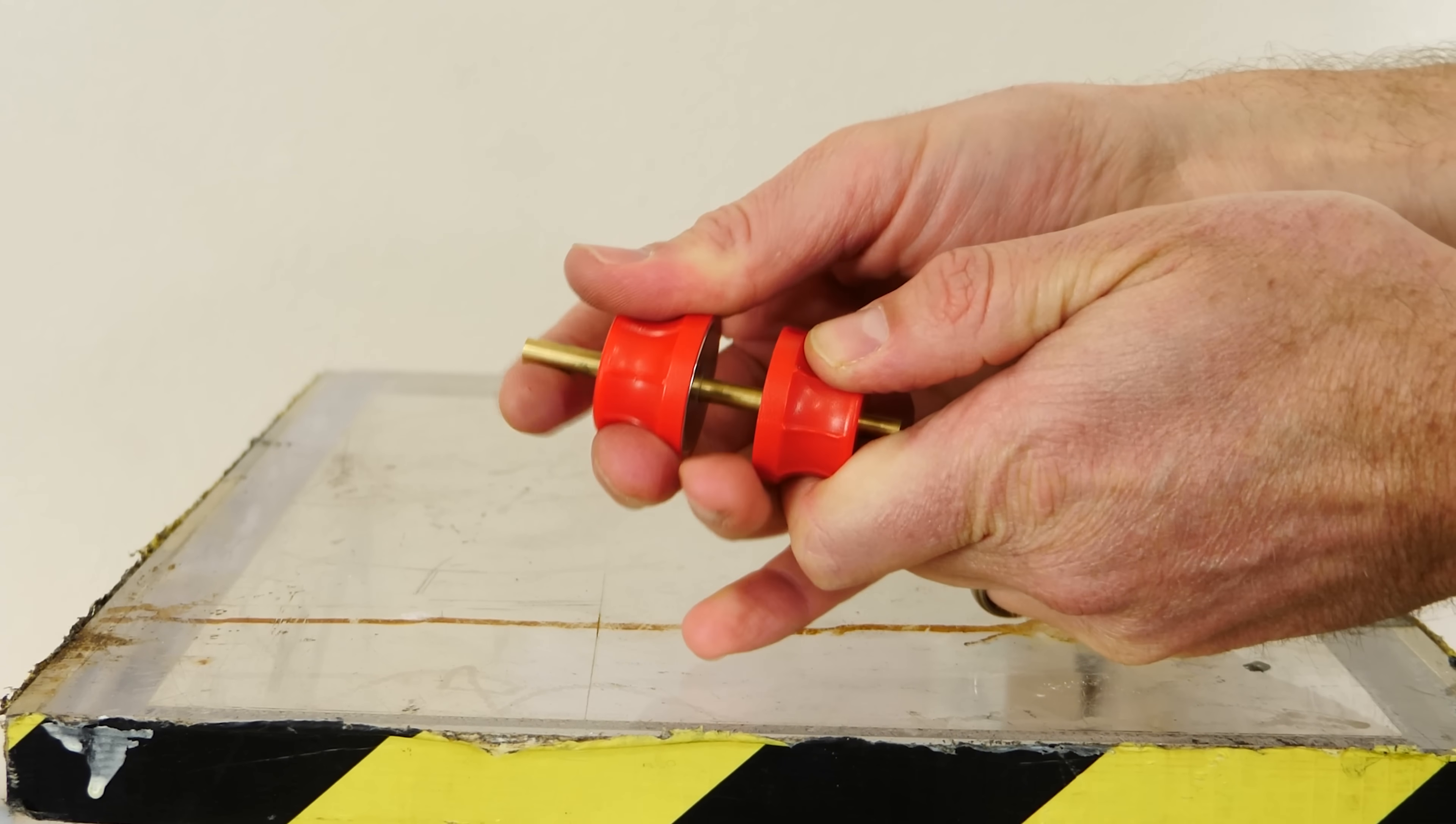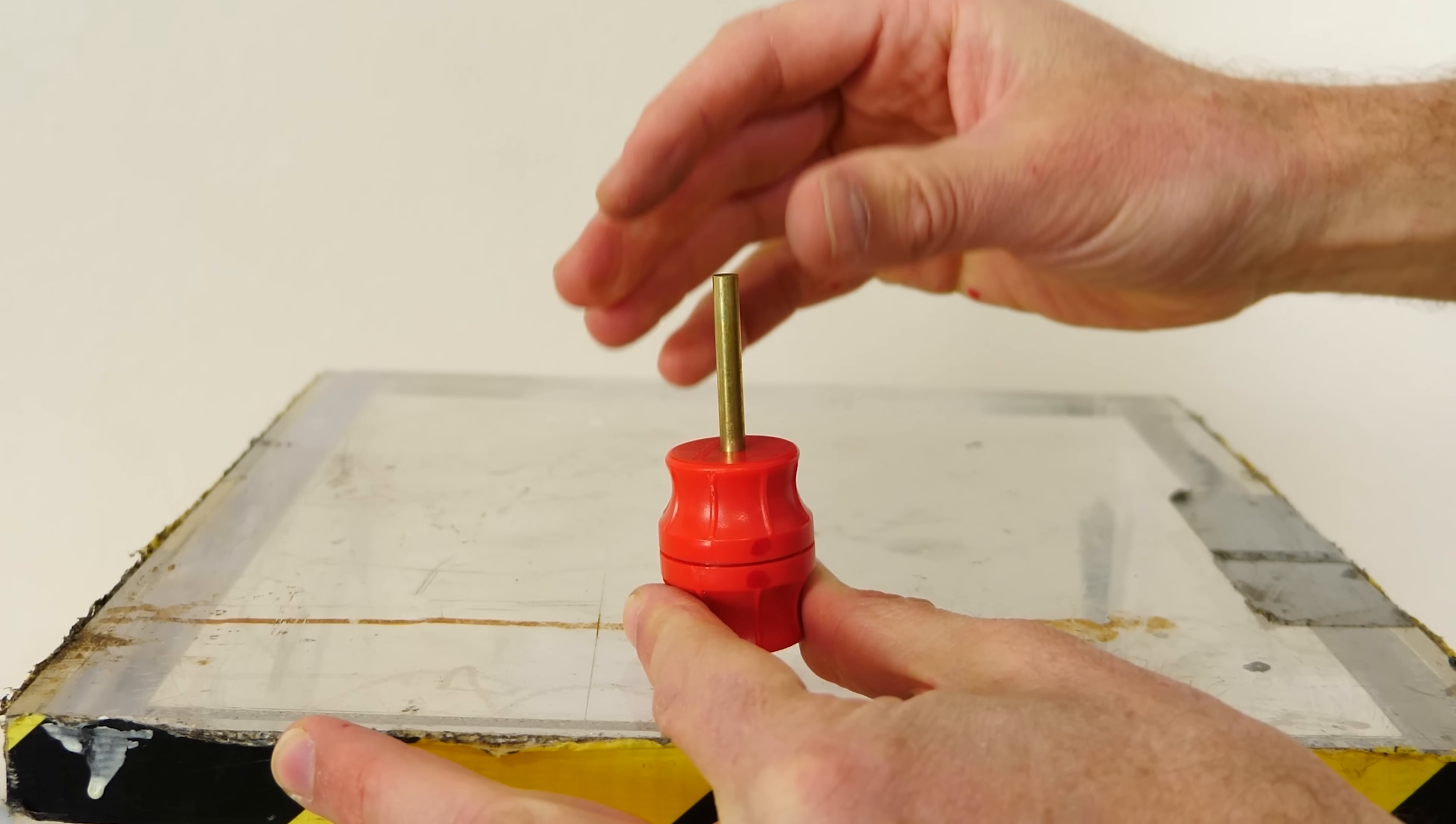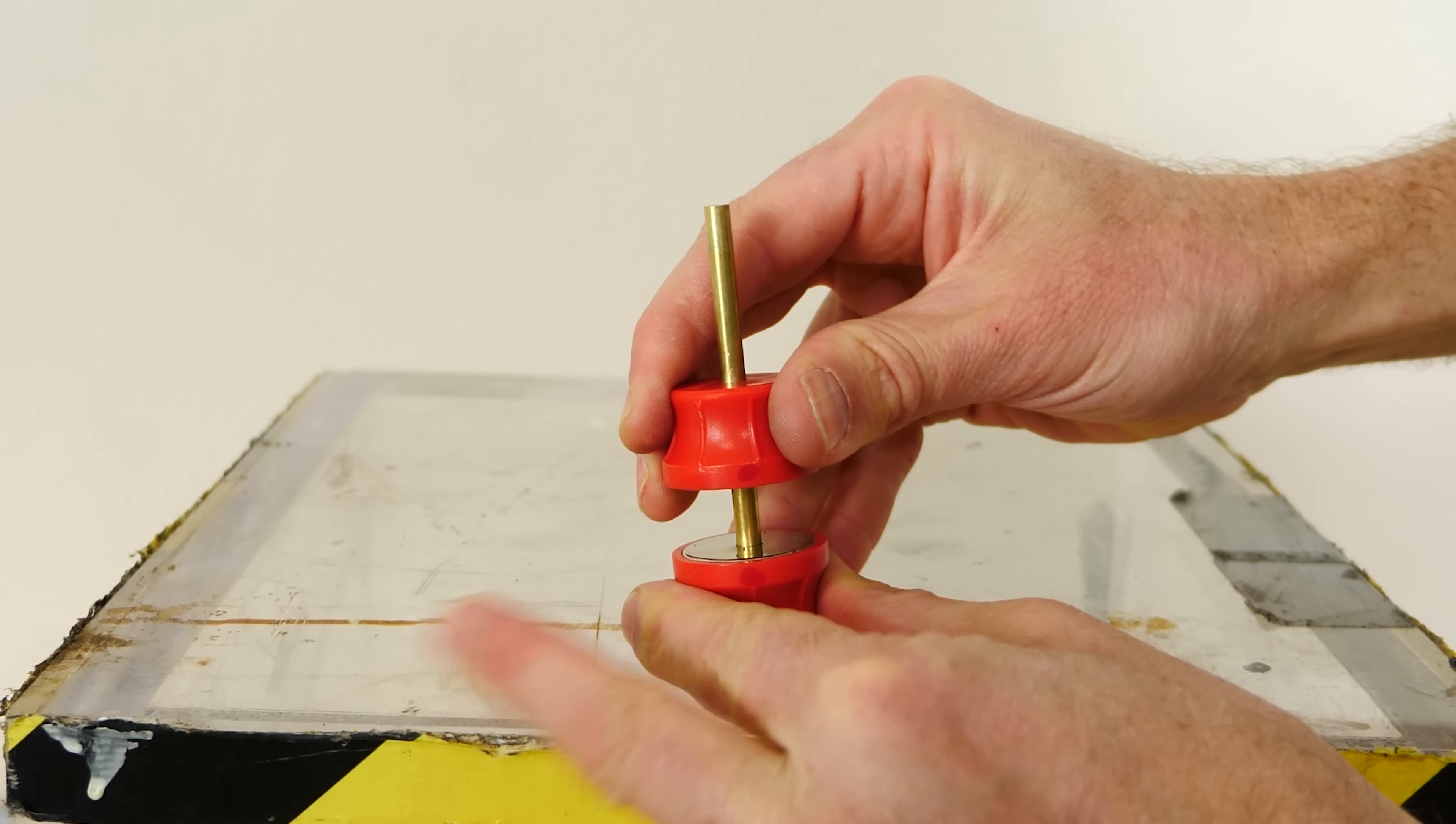Now here's another type of smart magnet. Here's two magnets that are attracted to each other. Pull them pretty hard to get them apart.